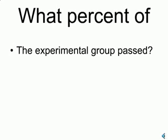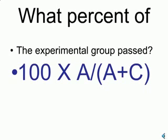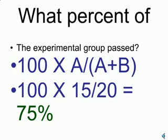What percent of the experimental group passed? Well, that would be according to the formula for percent, 100 times A divided by A plus C, or 75%.